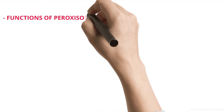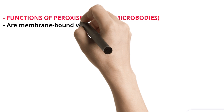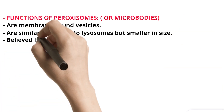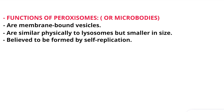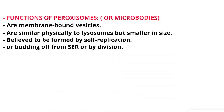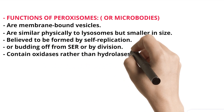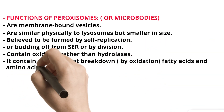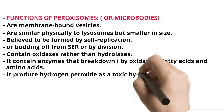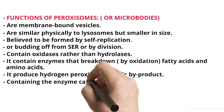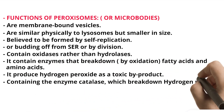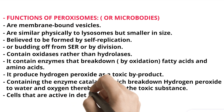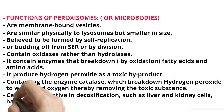Functions of Peroxisomes (or microbodies): They are membrane-bound vesicles, similar physically to lysosomes but smaller in size. They are believed to be formed by self-replication or budding off from the smooth ER, or by division. They contain oxidases rather than hydrolases. They contain enzymes that break down, by oxidation, fatty acids and amino acids, producing hydrogen peroxide as a toxic byproduct. Containing the enzyme catalase, they break down hydrogen peroxide to water and oxygen, thereby removing the toxic substance. Cells active in detoxification, such as liver and kidney cells, have many peroxisomes.